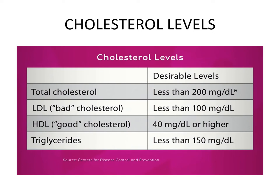We want the bad cholesterol to be low and the good cholesterol to be high. The other serum component we look at is our fats, or triglycerides — for adults we would like that level to be less than 150 mg/dL. A video explaining this slide is available in the resources. When individuals have high serum lipids and triglycerides, we refer to that condition as hyperlipidemia.